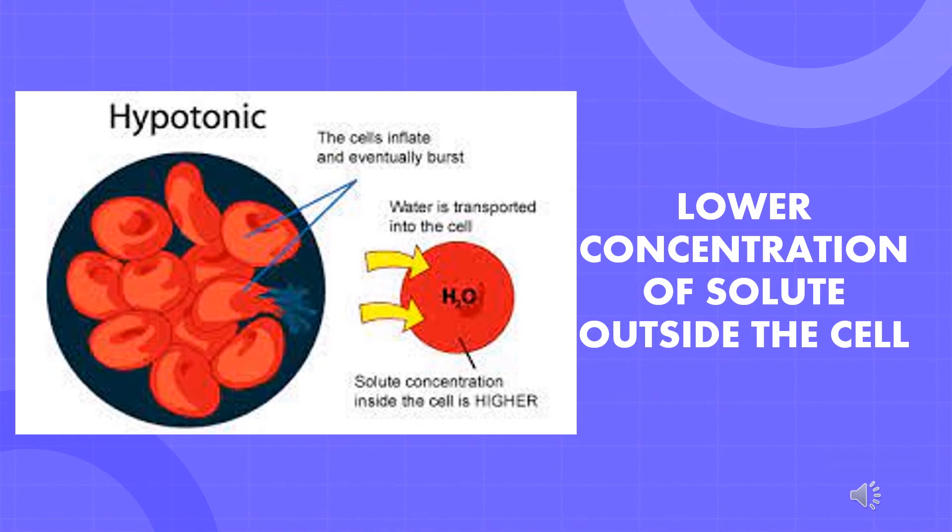In the second diagram, we have a hypotonic solution. In this condition, the solution outside the cell has a lower solute concentration than the fluids present inside the red blood cell. As a result, the water molecules from outside will move into the red blood cell, causing it to swell up.